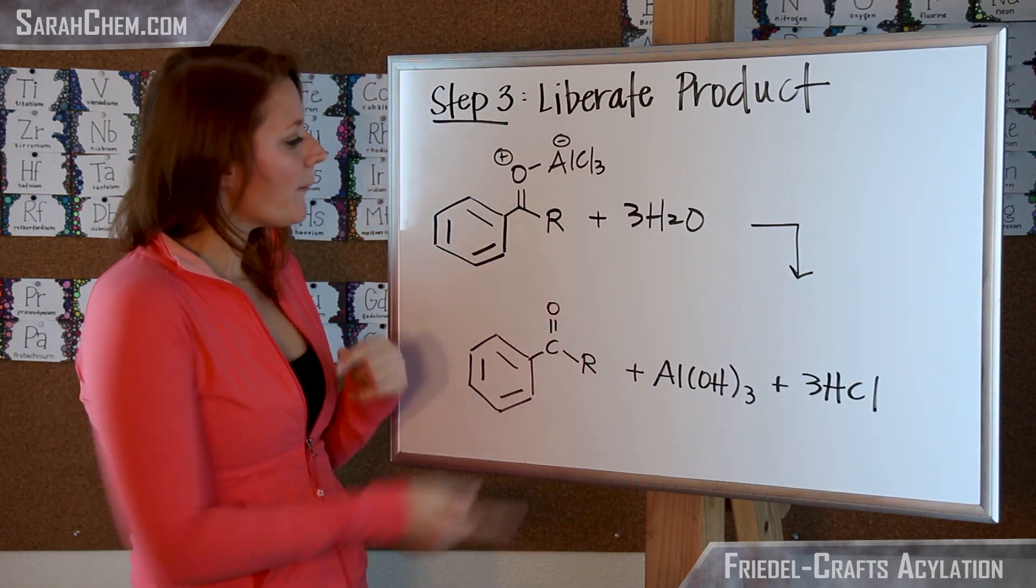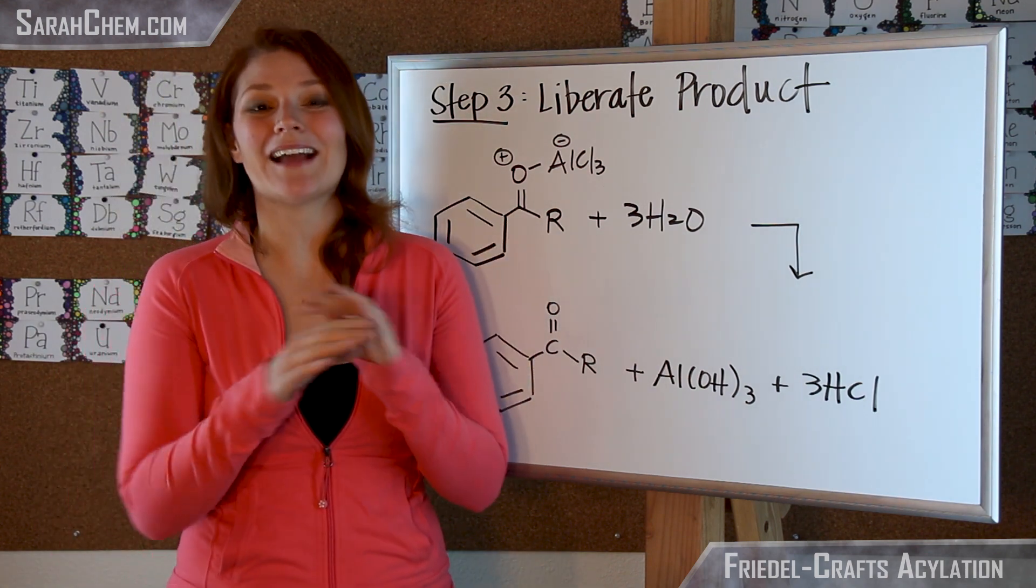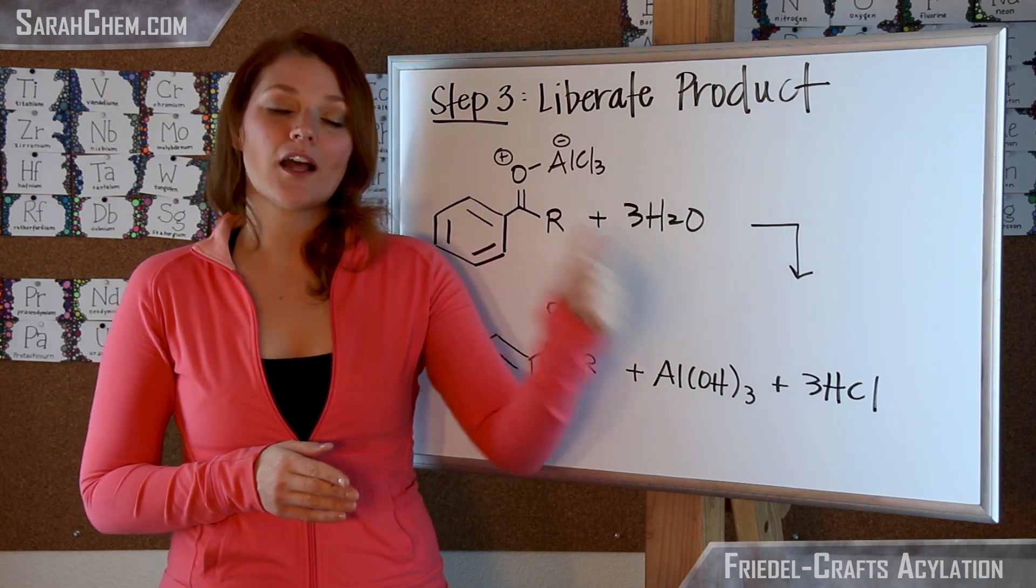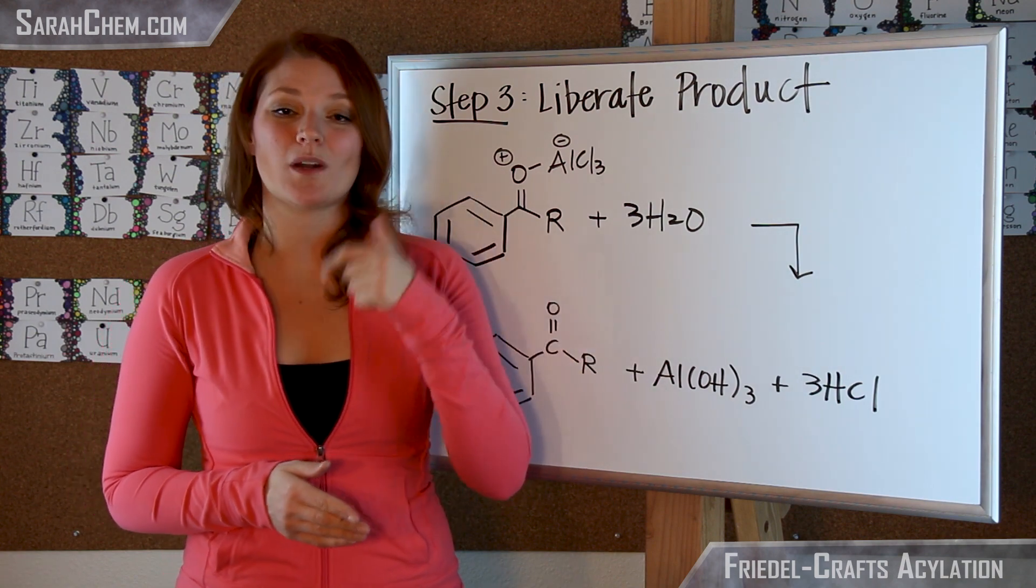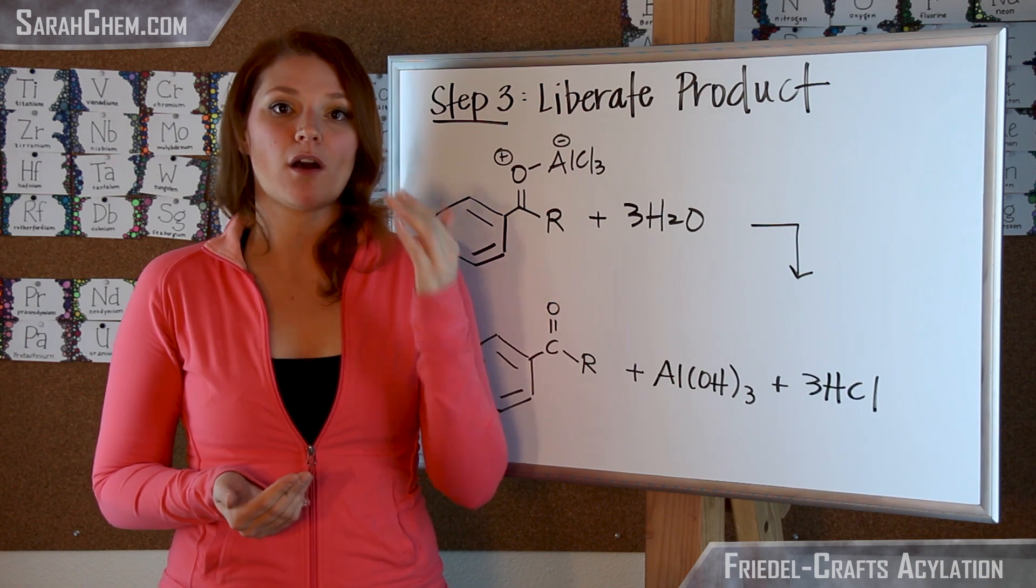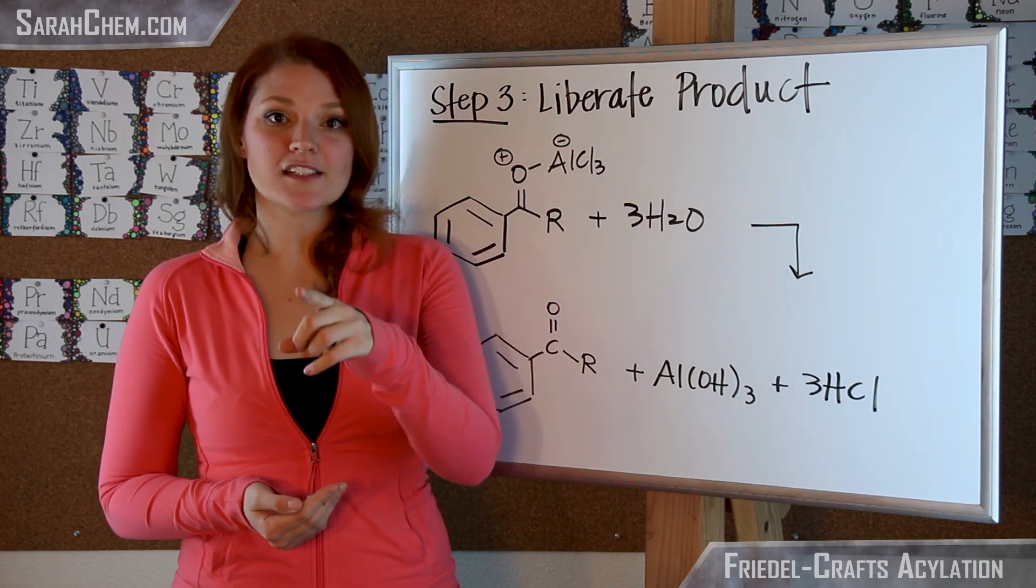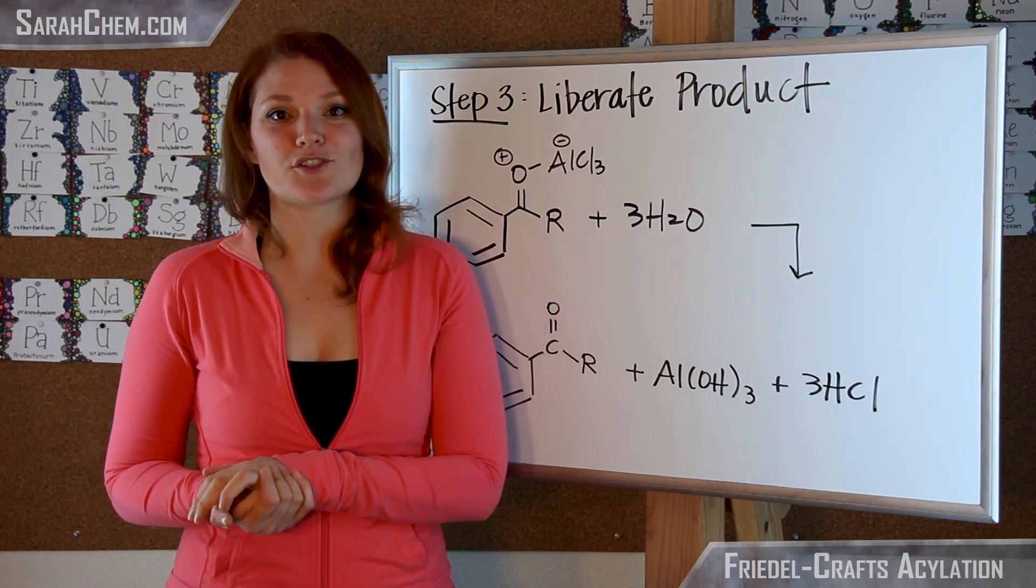Do remember one thing, I did comment and note that the R group cannot be a hydrogen, so this cannot undergo a Friedel-Crafts acylation if you want to make a benzaldehyde. You'd actually have to use the Gatterman-Koch reaction in order to do that. And there is a video for that, just click the link in the description below.